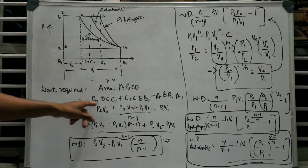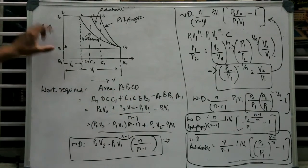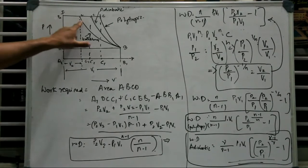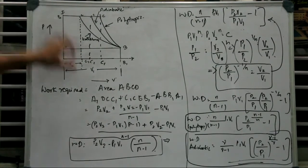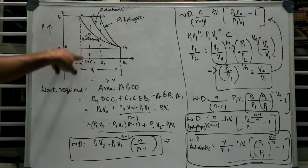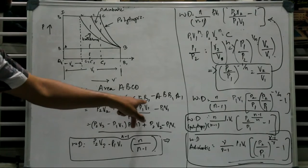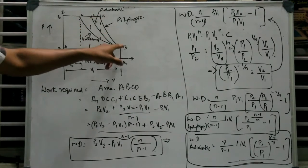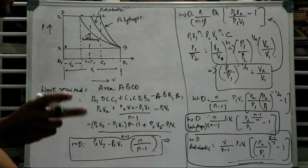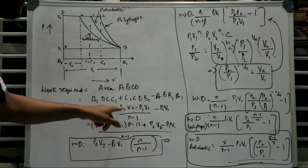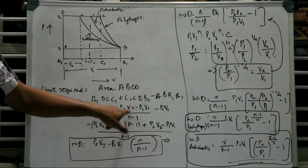So coming to the expressions for these areas, first one is going to be this area of the rectangle, that is L into B, that is going to be P2 into V2. This volume we have considered as V2 plus C1, C, B, B1. The expression for area of work done under the curve for a polytrophic process is given by P2 V2 minus P1 V1 divided by N minus 1, where N is the polytrophic index.